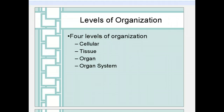In the human body, and in all organisms, there are up to four levels of organization. The most basic level is cellular, followed by tissues, organs, and organ systems. In this lecture, we're going to talk about the definitions and types of each of these levels of organization.